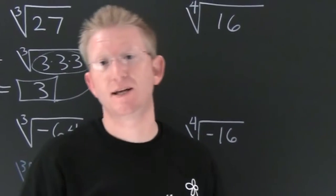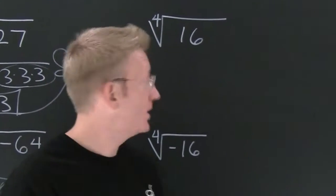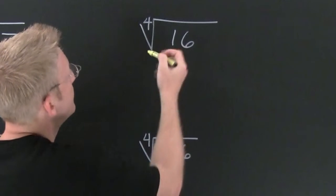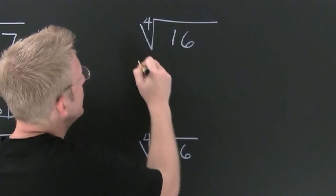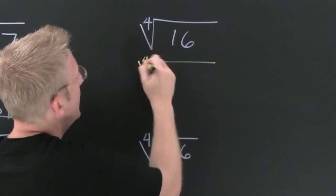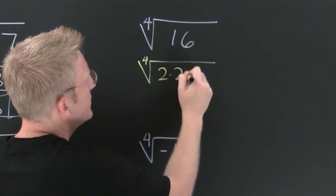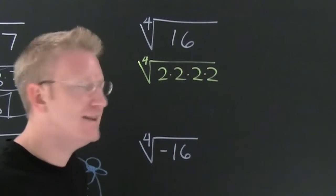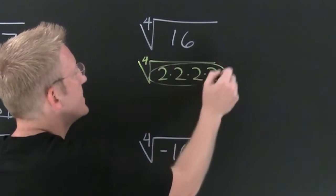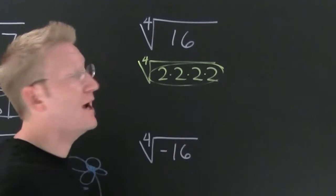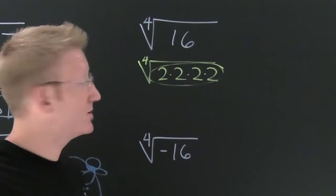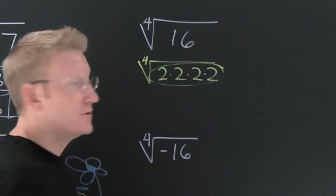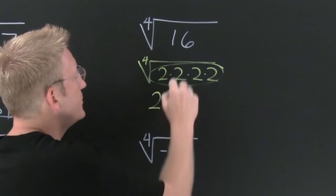Now let's look at the fourth root. The fourth root means you need four copies — sets of four factors. Breaking this down: that's two times two times two times two times two. There is one complete set of four, so for every set of four factors you can pull one out of the fourth root. This gives us 2.